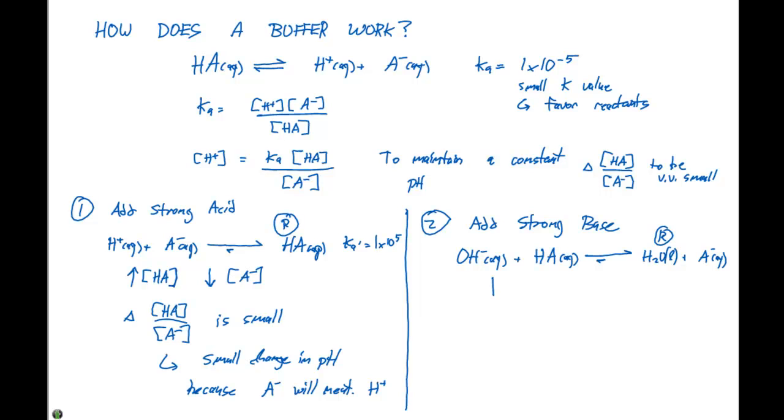So what happens here is we're gonna see a drop in concentration of HA. And at the same time, we're gonna see a rise in concentration of A⁻. So in this case, our delta HA divided by A⁻ is also small.